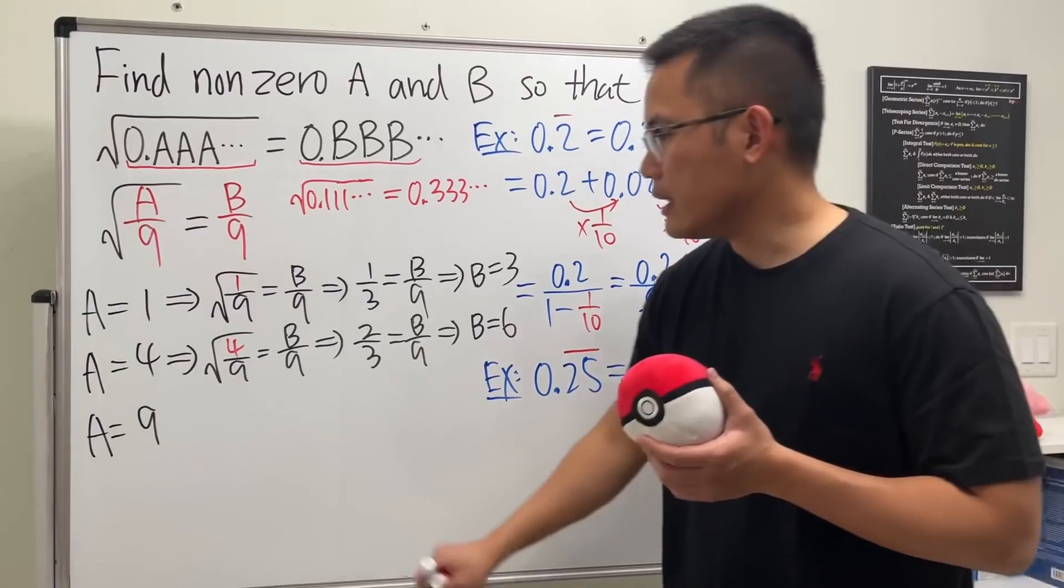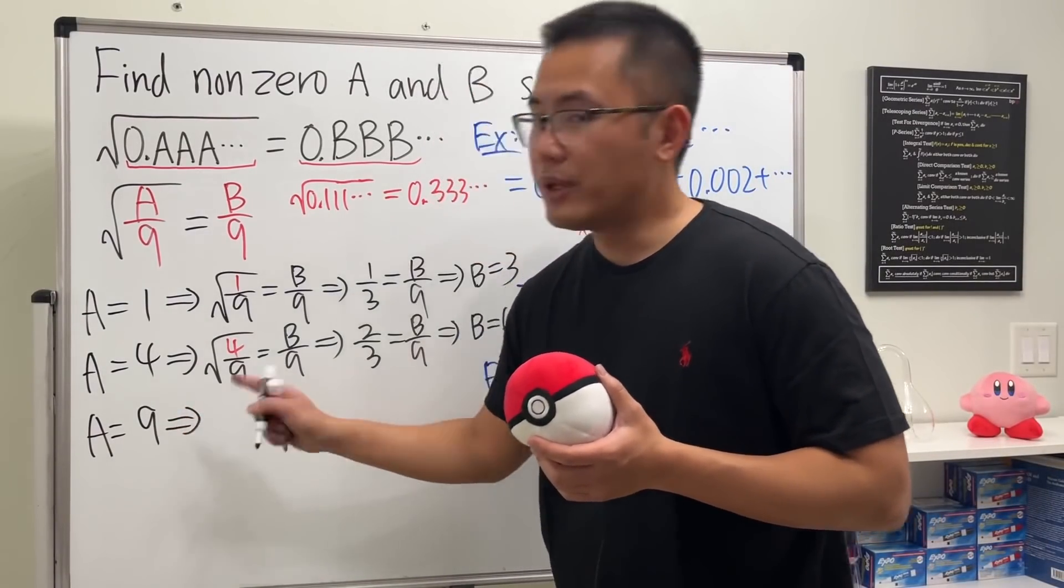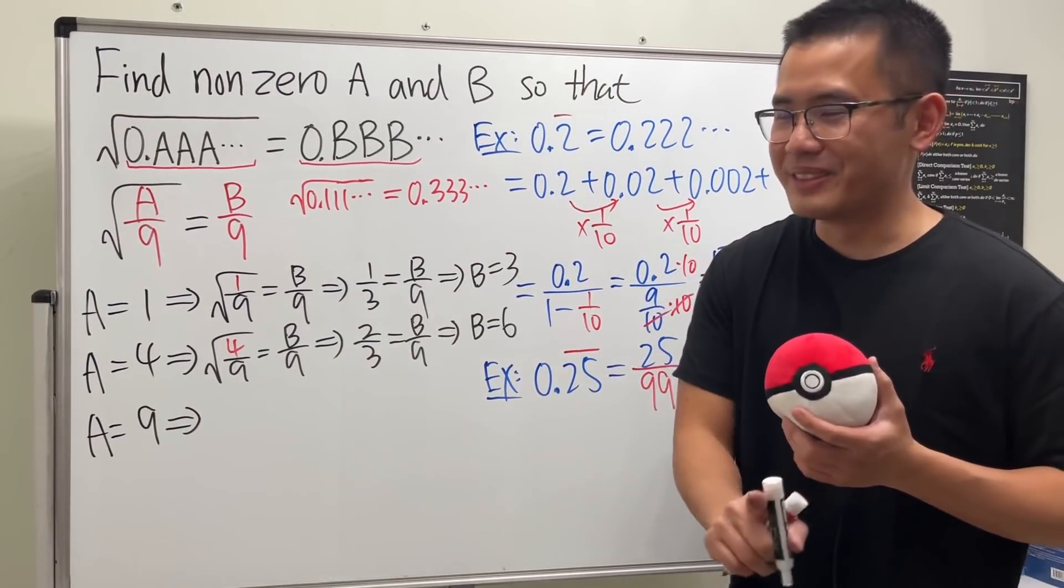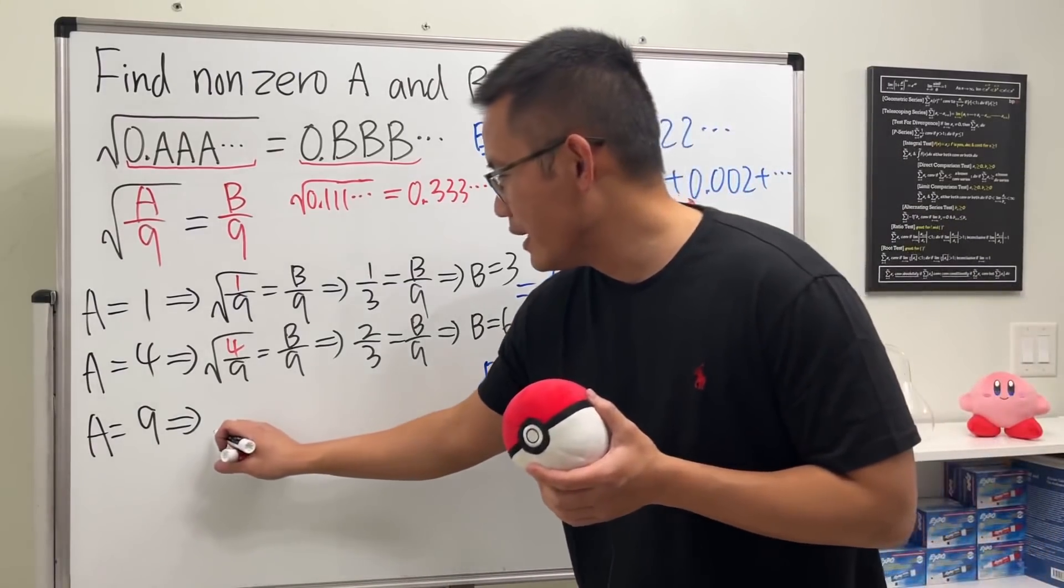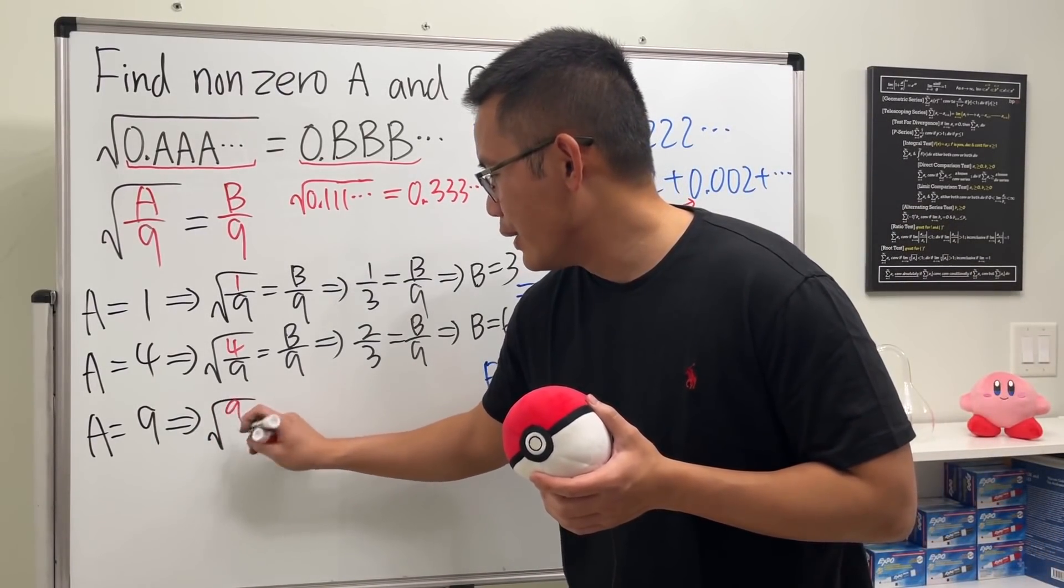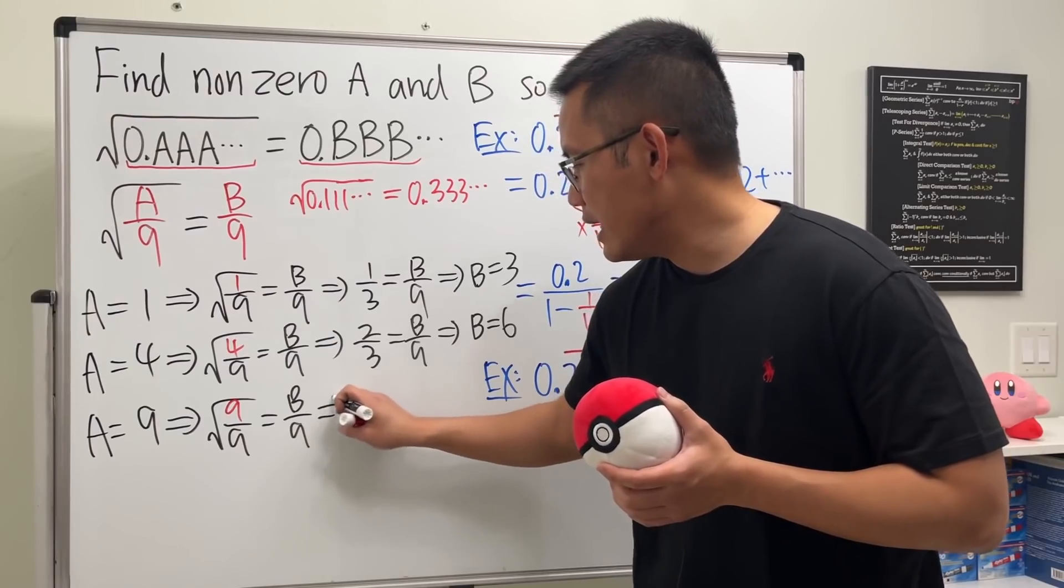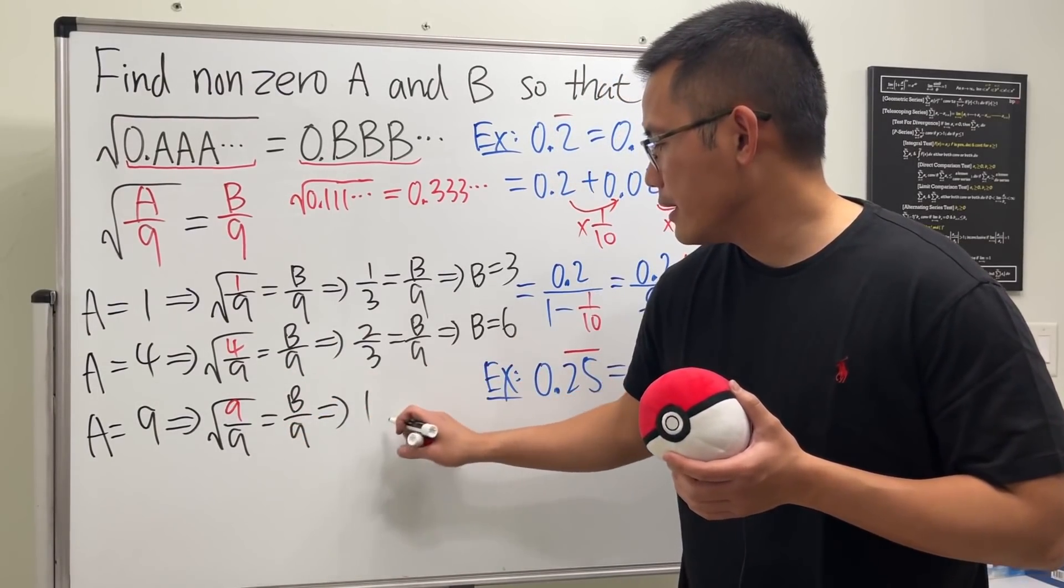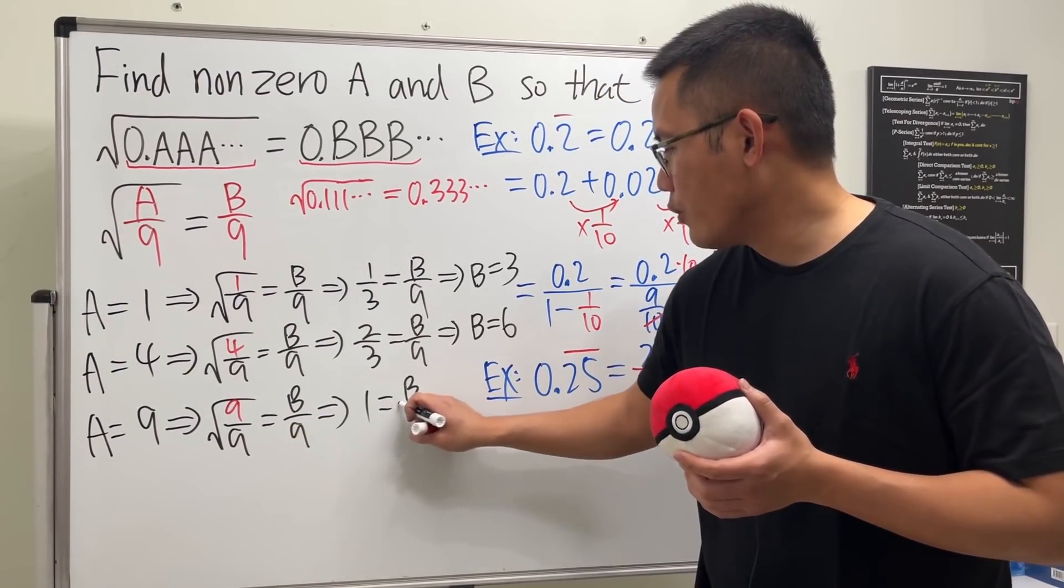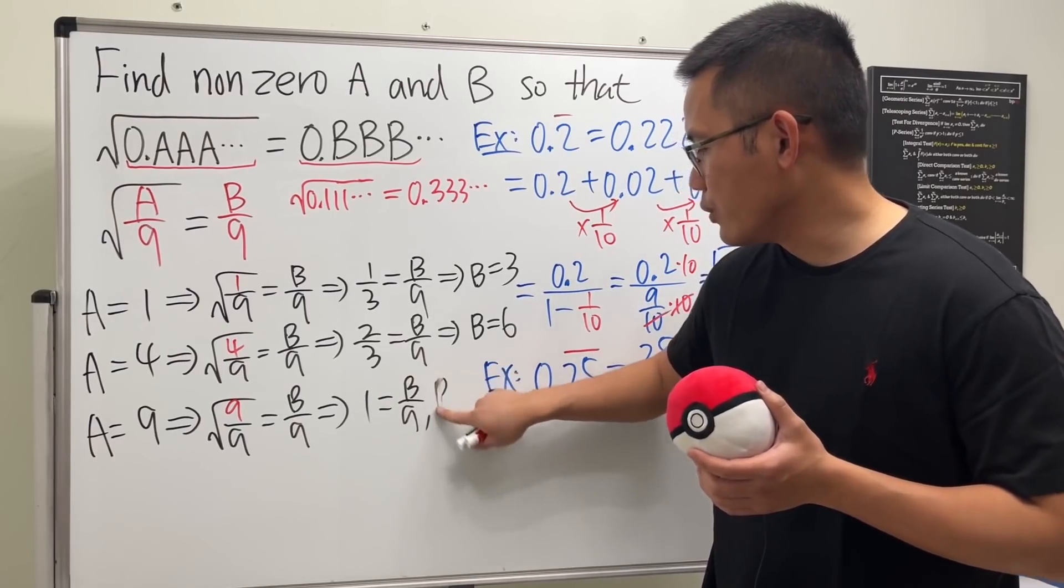Lastly, this is pretty debatable, but continue watching. We get square root of 9/9 equals B/9. That's 1 equals B/9, so B equals 9.